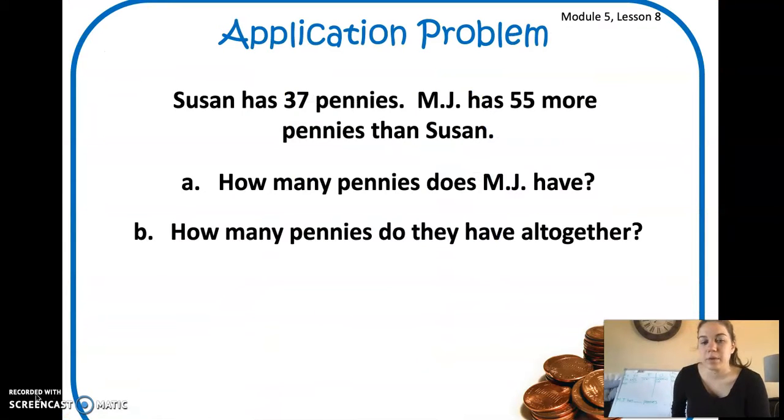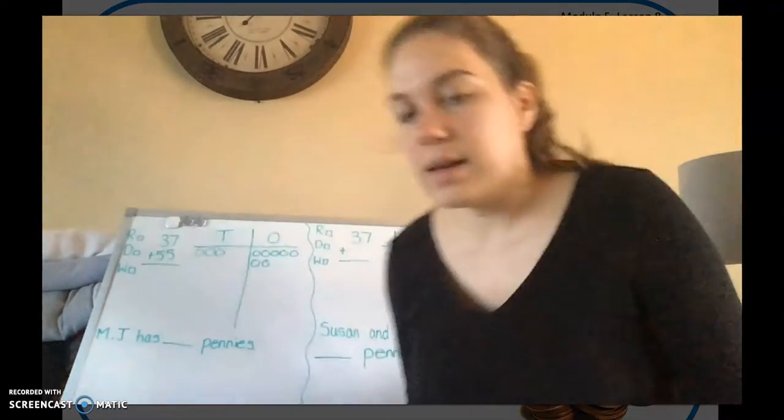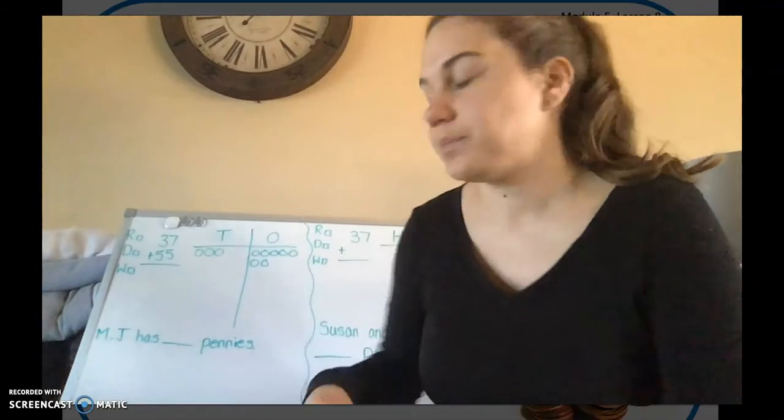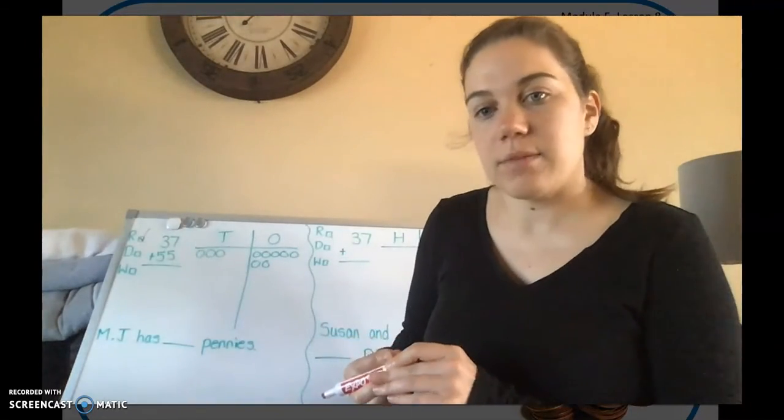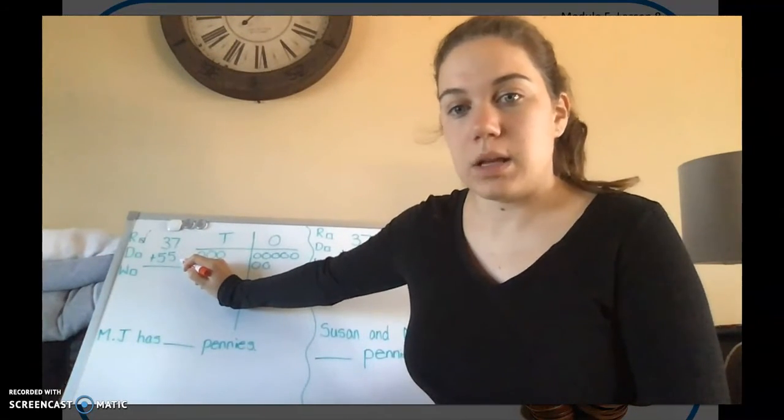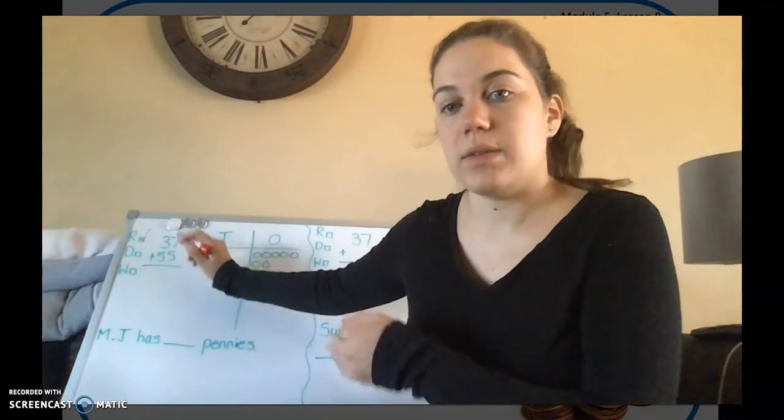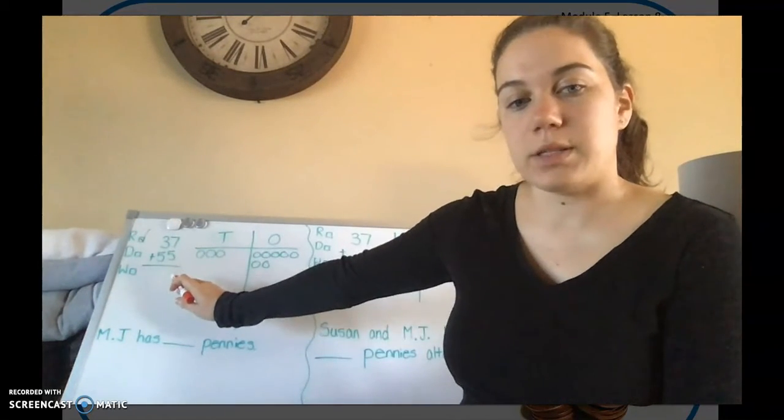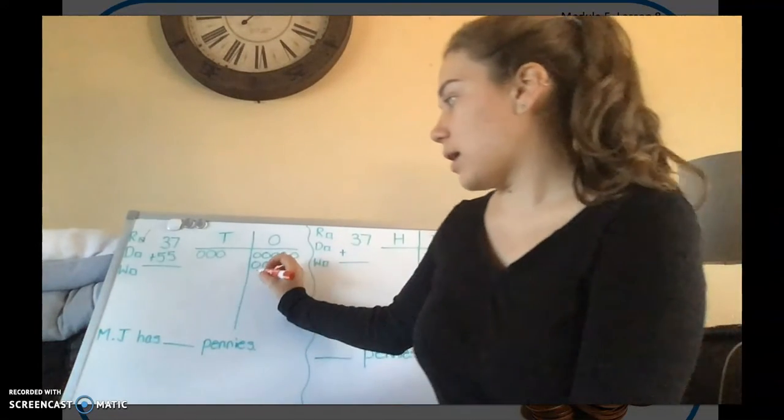Alright here's our application problem for today. It says Susan has 37 pennies. MJ has 54 more pennies than Susan. Part A asks how many pennies does MJ have? So I have split it into two sides because there's two parts to our problem. I have down 37 plus 55 because Susan had 37 and they said that MJ had 55 more than Susan. So I already have my 37 drawn on my place value chart. Now I need to add my 55. Remember we always start in our ones column so I'm going to add 7 plus 5. The 7's already there. So let's add 5 more.